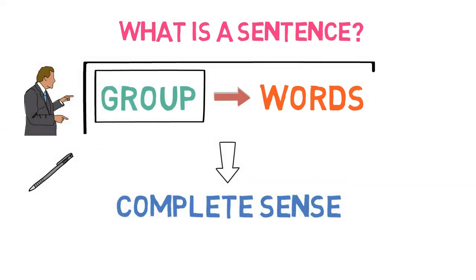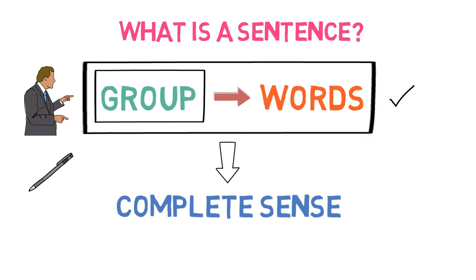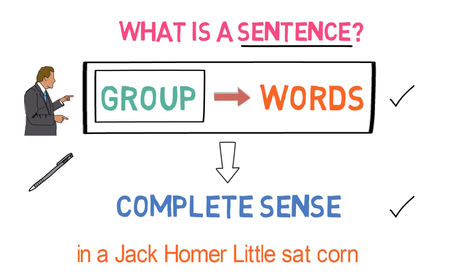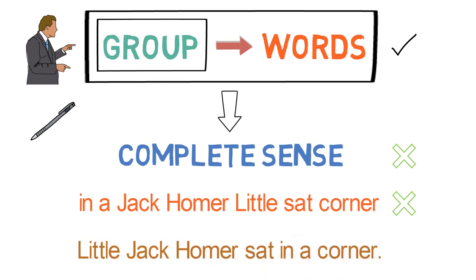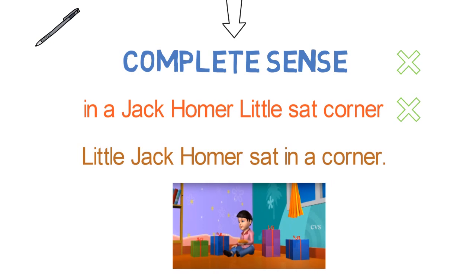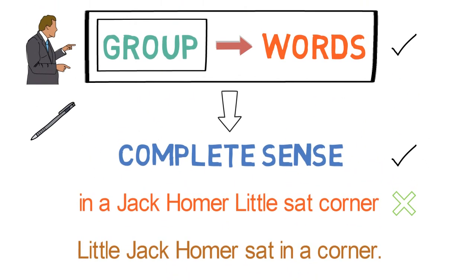We generally use these words in groups. If this group of words makes complete sense, then we call it a sentence. For example, 'in a Jack Homer little sat corner' — this is a group of words, but it is not making any sense. Now, let me rearrange the words: 'Little Jack Horner sat in a corner.' Now we understood that a little boy named Jack sat in a corner of the home. As this group of words has a meaning or sense, it is called a sentence.